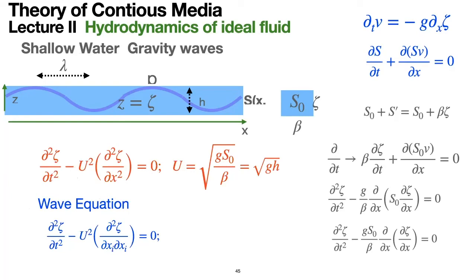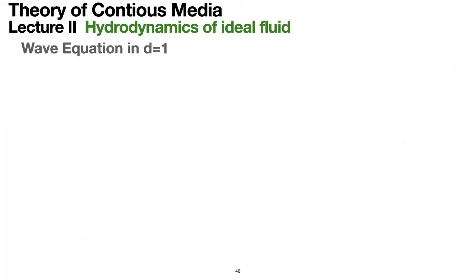We have solved the problem: in a shallow channel, the profile of the water changes as a propagating wave with velocity U. We now solve the wave equation in one space dimension, using a change of variables: xi equals x minus Ut, and eta equals x plus Ut.